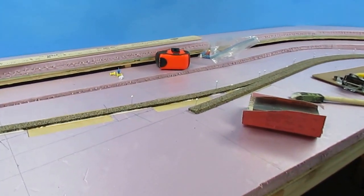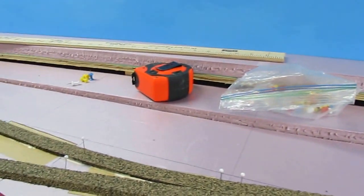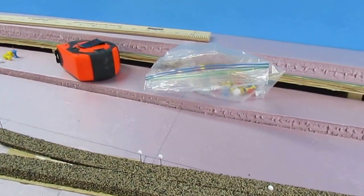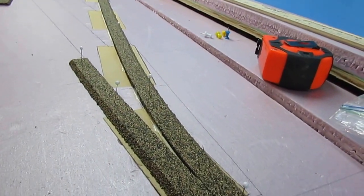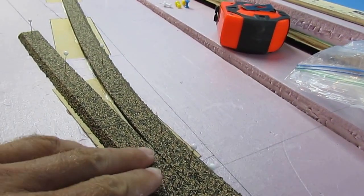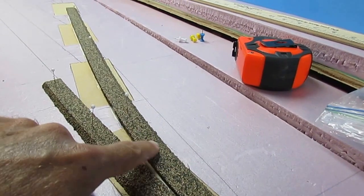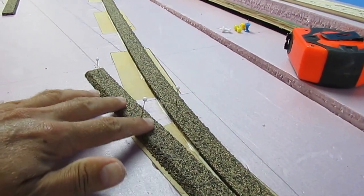Okay guys, so I'm getting ready to install the cork roadbed where all the turnouts are. Usually a pretty good rule of thumb is when you get to the turnout, just follow the fork. So in this case, the diverging route would be going off to the right and the main route